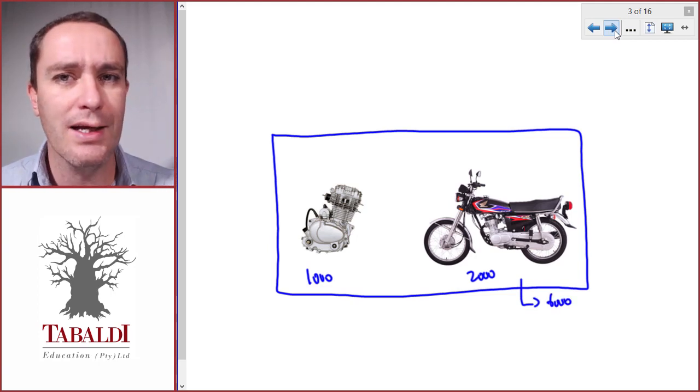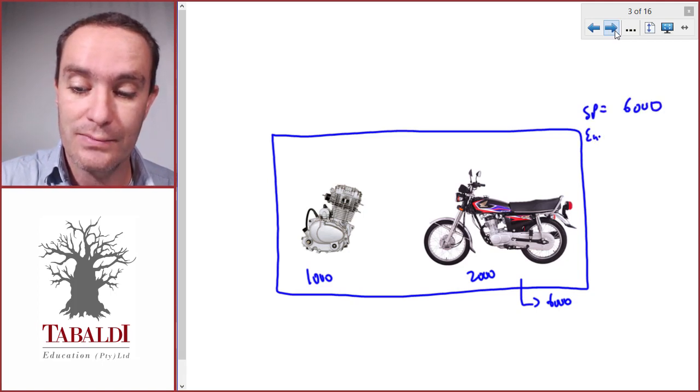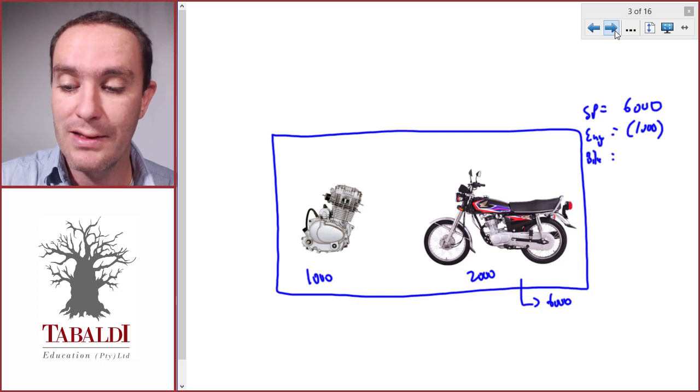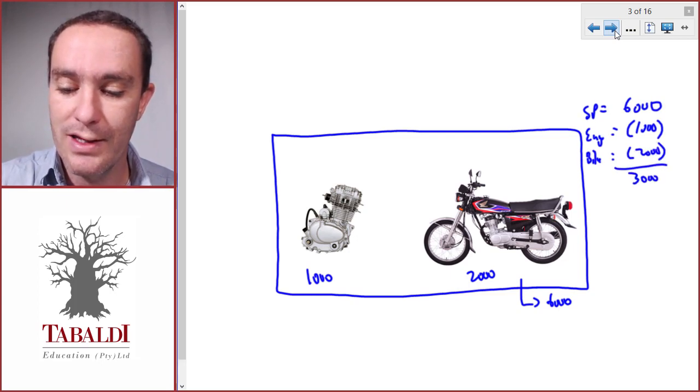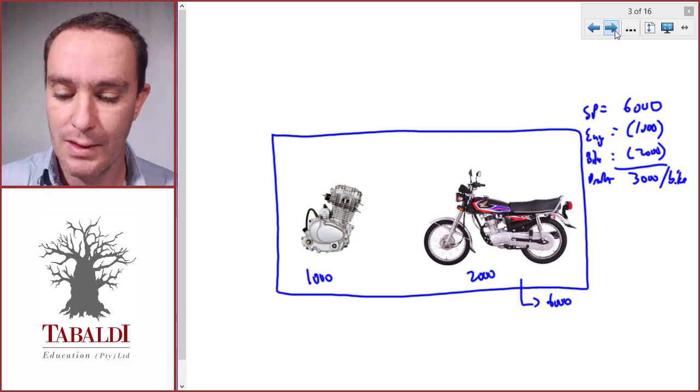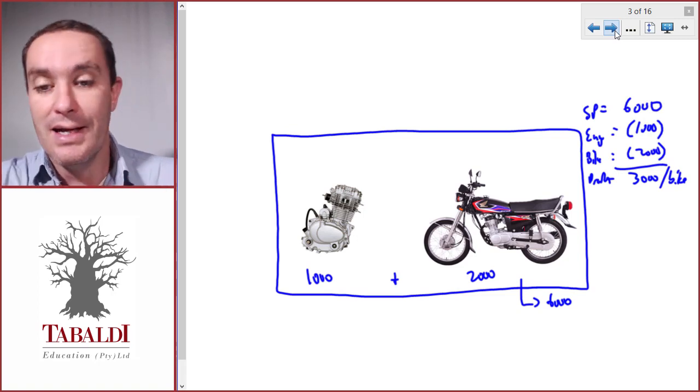We can quickly calculate the profit per bike. We've got a selling price of six thousand, the cost of the engine is one thousand, the cost of the rest of the bike—the frame, etc.—is two thousand, so the company makes a profit of three thousand per bike.